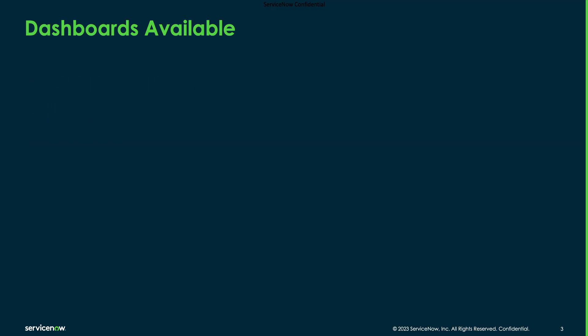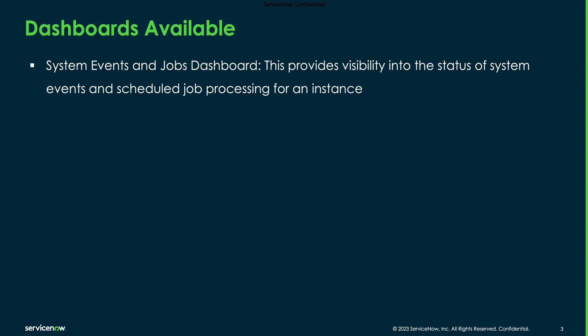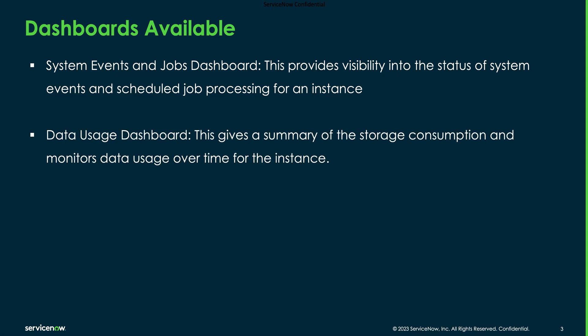What are the different dashboards available? The first one is the System Events and Job Dashboard — this provides visibility into the status of system events and scheduled job processing for an instance. The other one is the Data Usage Dashboard, which gives a summary of storage consumption and monitors data usage over time for the instance.